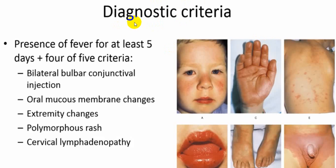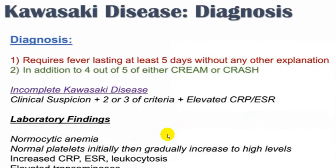Regarding diagnostic criteria: any four of these five criteria with fever for more than five days constitute a diagnosis. The five criteria are: bilateral conjunctivitis, oral mucosa involvement, extremity changes, polymorphic rash, and lymphadenopathy. If any four are present — conjunctivitis, skin changes in palm and sole, rash, strawberry tongue, and lymphadenopathy — this goes directly in favor of Kawasaki disease. That's why they say fever more than five days with either CREAM or CRASH criteria.